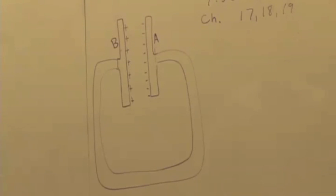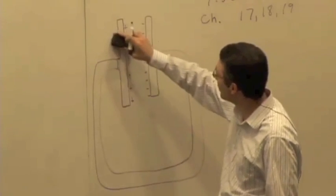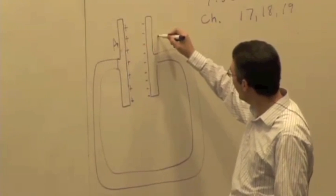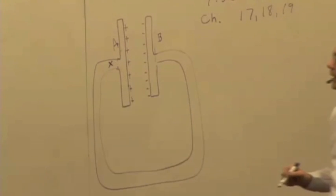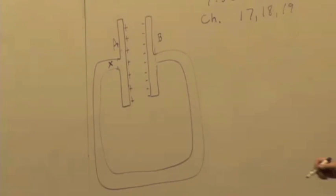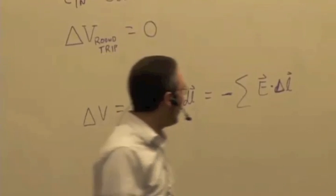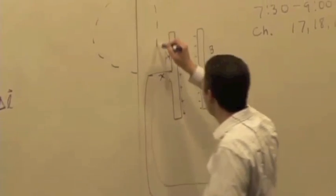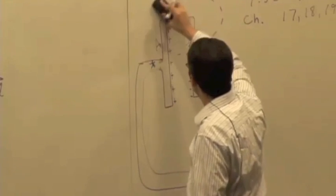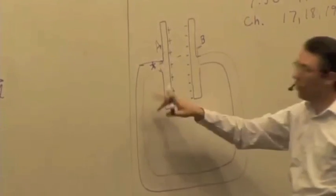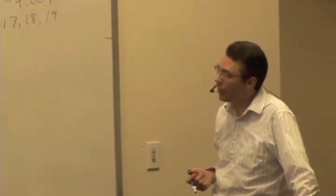Let's say we want to pick a path that goes round trip, starting at A and going back to location A. If I pick a path that starts at A and ends up at A, no matter what path I pick, it should give me a round trip potential difference equal to zero. But picking a path that goes outside the circuit doesn't really tell me much about the electric field inside the wires of the circuit, which is what we're interested in if we want to analyze the current and potential difference along the lengths of the wires.